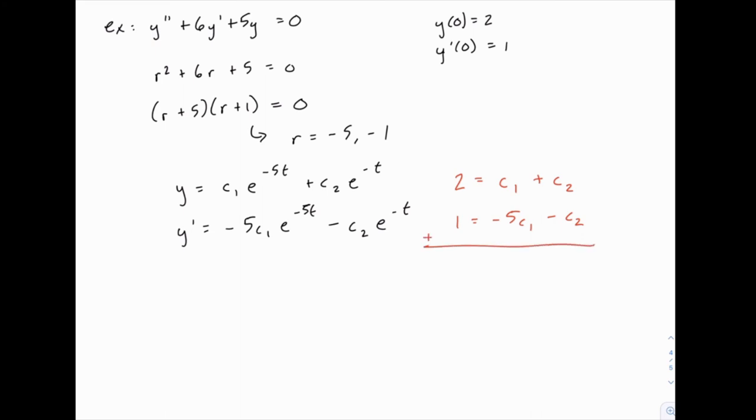we'll get 3 equals negative 4c1, and the c2s cancel each other, so c1 equals negative 3 fourths.